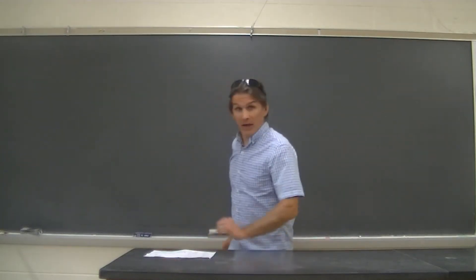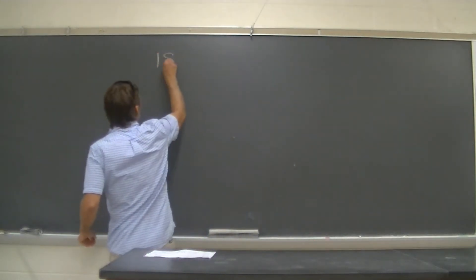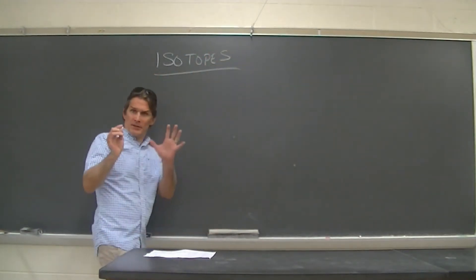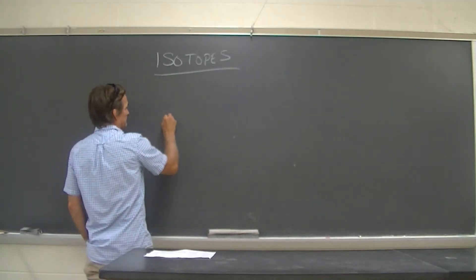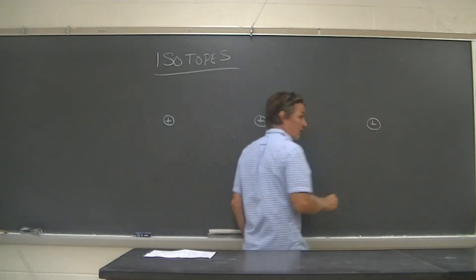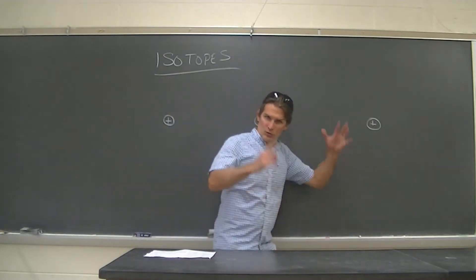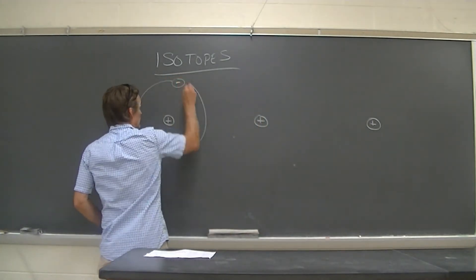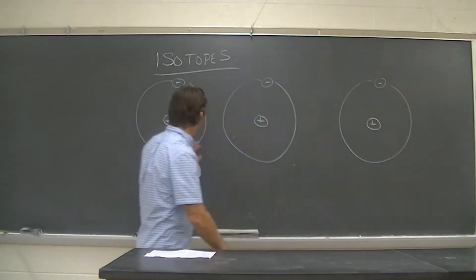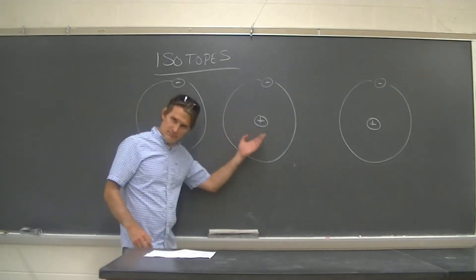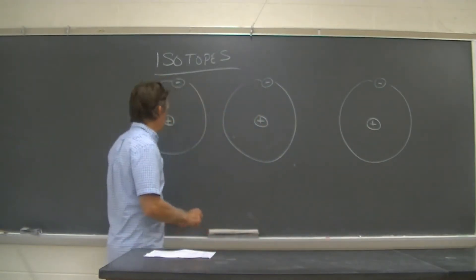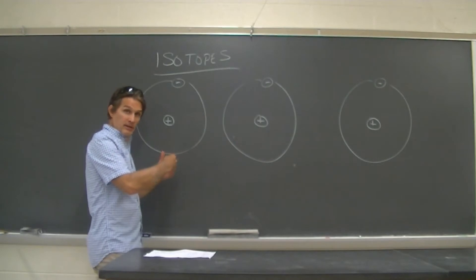I want to talk to you a little bit about isotopes. Let me give you a simple example of isotopes. There are three isotopes of hydrogen. All hydrogen atoms have one proton in the nucleus and one electron outside the nucleus. Because each of these atoms has one proton, we call all of them hydrogen.